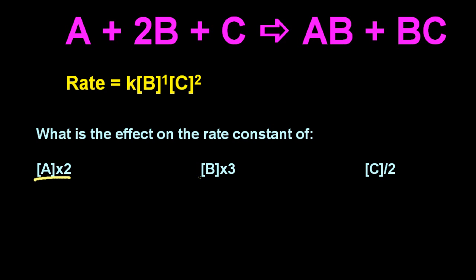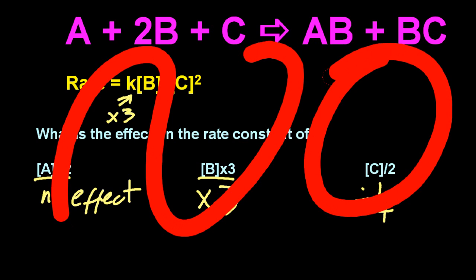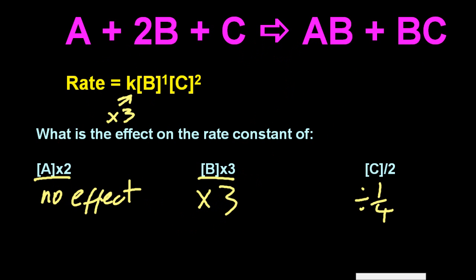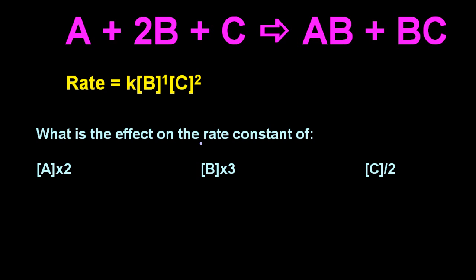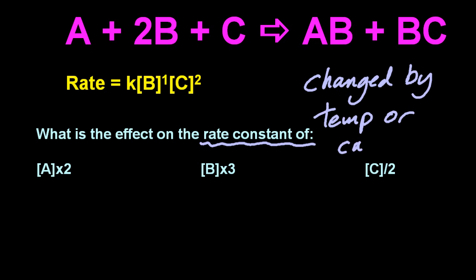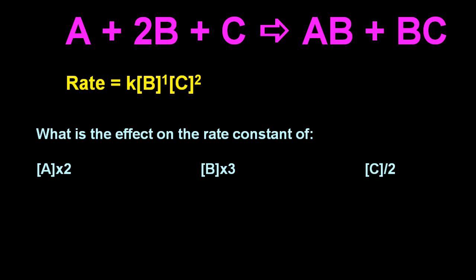So what's the effect on the rate constant if I double A? No effect. If I triple B, the rate constant gets three times. Is no one going to stop me? No, no, no. You've fallen into the trap. Nothing changes the rate constant except temperature or a catalyst, which I don't think is on the syllabus. The rate constant, it's constant.